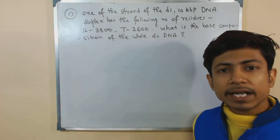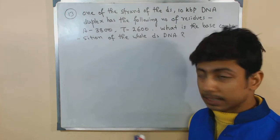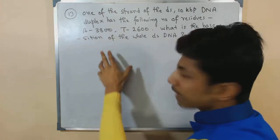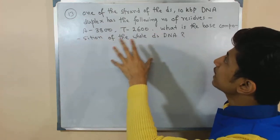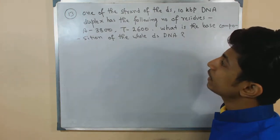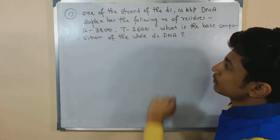In this kind of question, you need to read carefully to understand what they're telling us. They give us the number of bases, adenine and thymine, for a double-stranded 10 kbp DNA, meaning a 10 kilo base pair DNA duplex with the following number of residues.